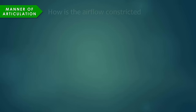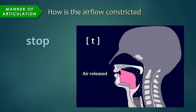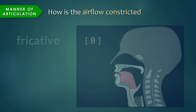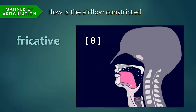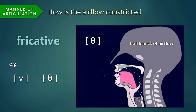Manner of articulation refers to how the airflow is constricted in the vocal tract. Stop sounds result from a complete constriction of airflow, followed by a release of that air, such as p, t, k, b, d, g. Fricatives are sounds produced when the tongue approaches but does not make contact with a place of articulation, causing a bottleneck of the airflow, and this gives the sound a friction-like quality, such as v, th, z, sh.